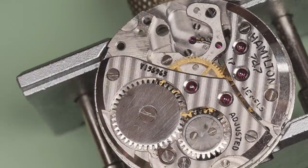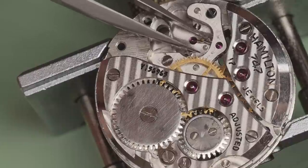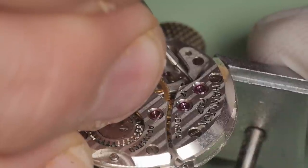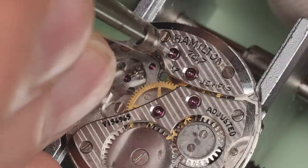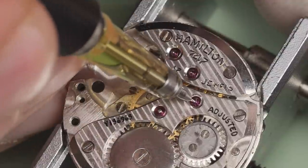I put a little wind in the mainspring so I can test if power is making its way through the entire train properly. The pallet is indexing correctly so I'm confident that I can move on with lubricating the exit pallet stone. Since I'm in lubrication mode at this point, I'll go ahead and oil the wheel train pivots with an auto oiler.